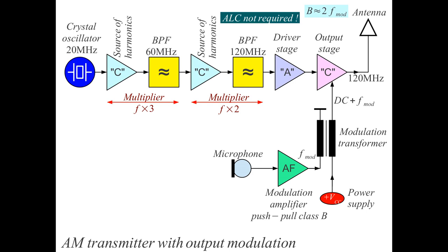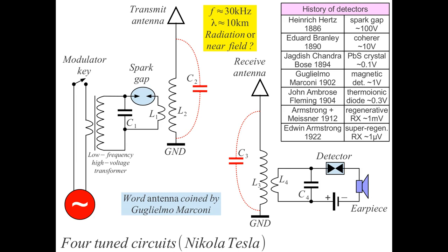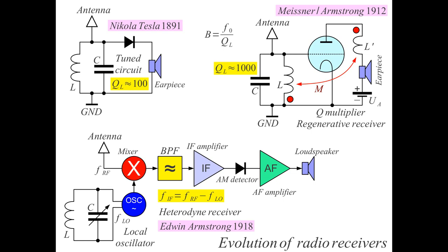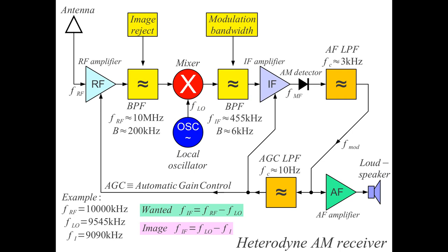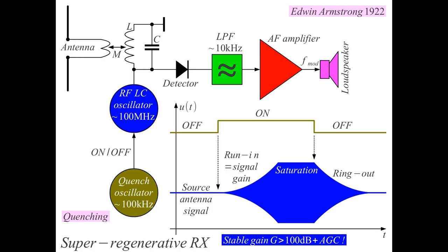Once people have a solution for a certain problem, it's hard to persuade them that there may be more efficient solutions. We had the solution for the transmitter, and we also had many different solutions for the receiver, including probably the best solution — the heterodyne receiver. We also had very simple receivers like the super regenerative receiver, which can work with analog amplitude modulation for speech. Now when all this is known, it is very difficult to persuade people that things can actually be done better, using perhaps a different kind of modulation.